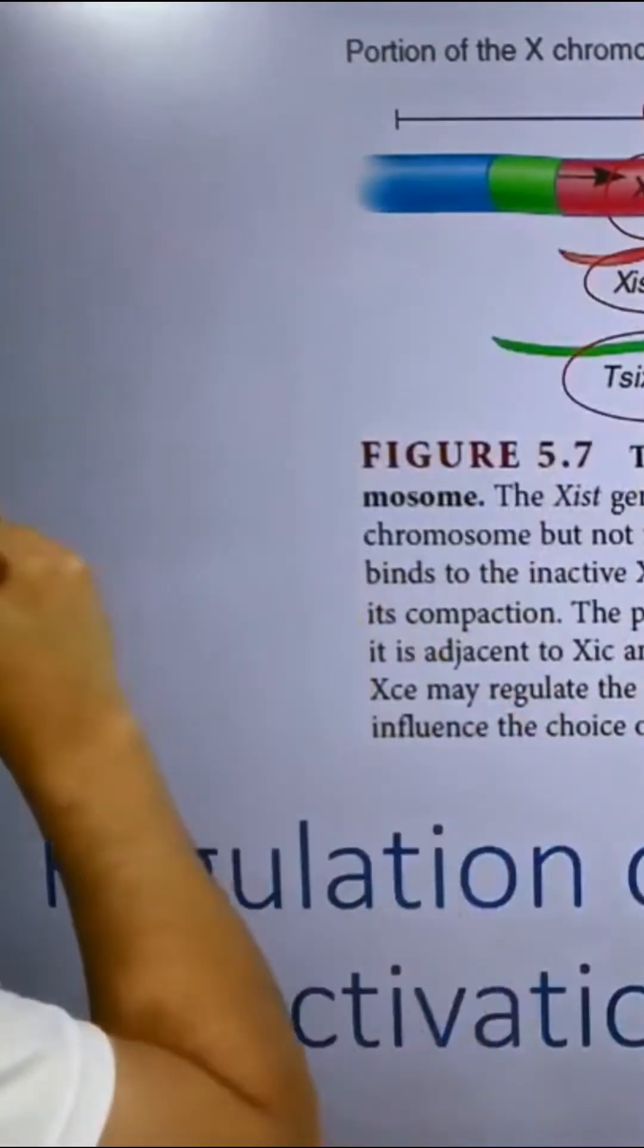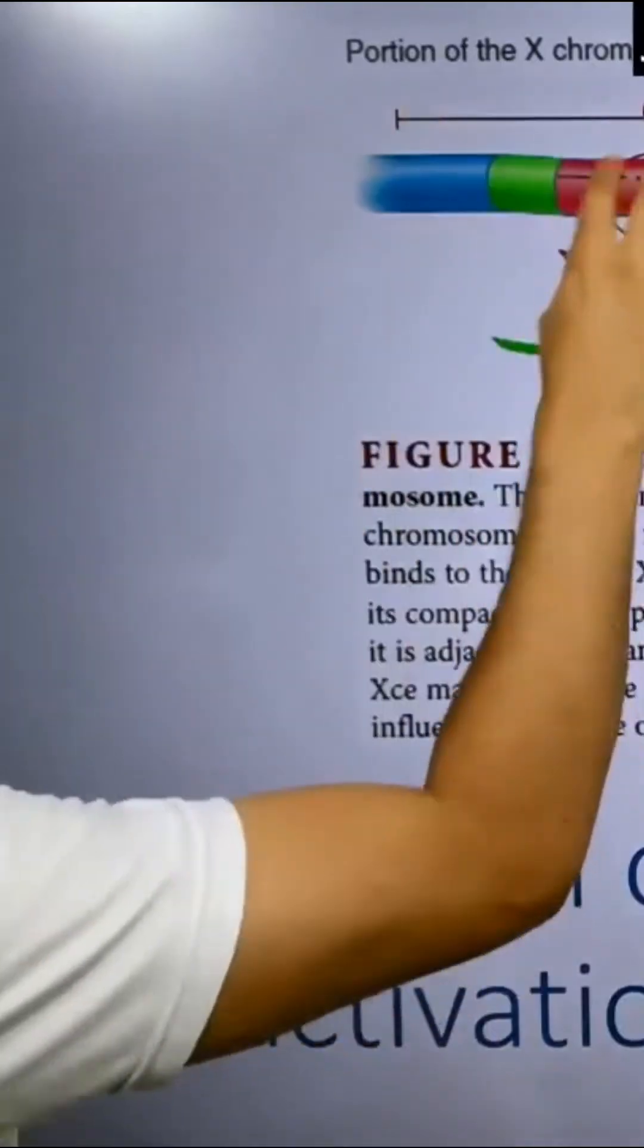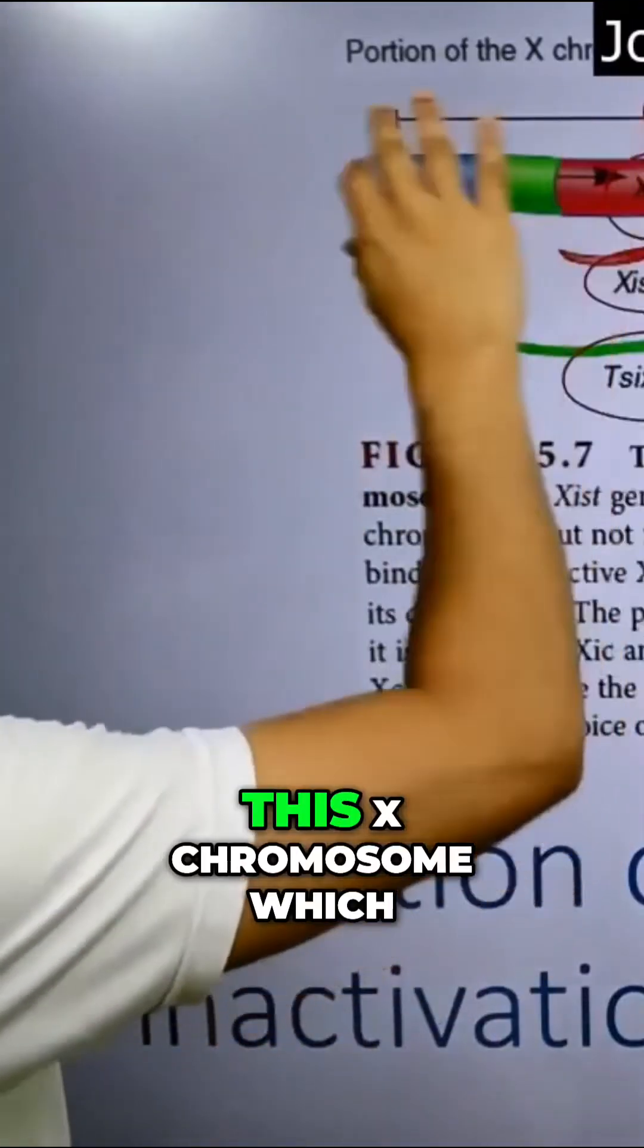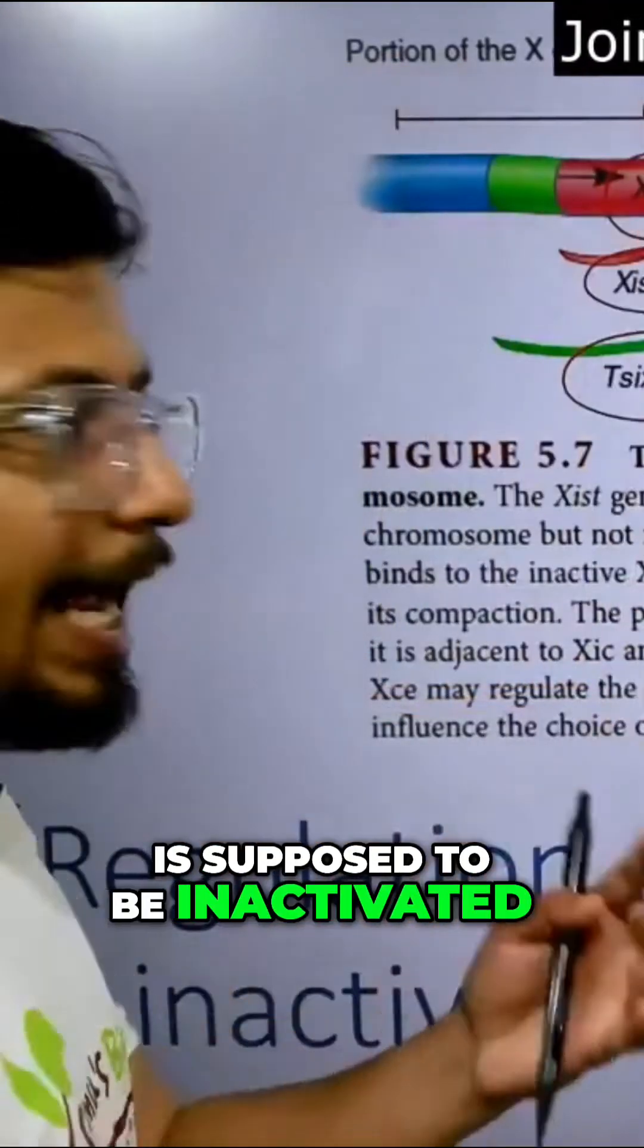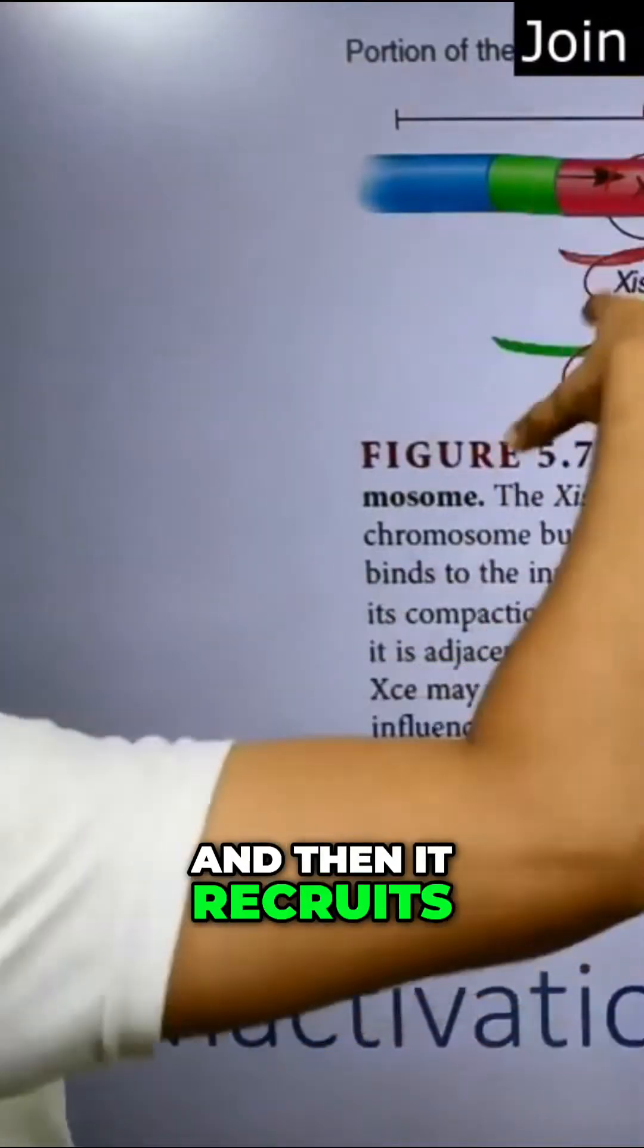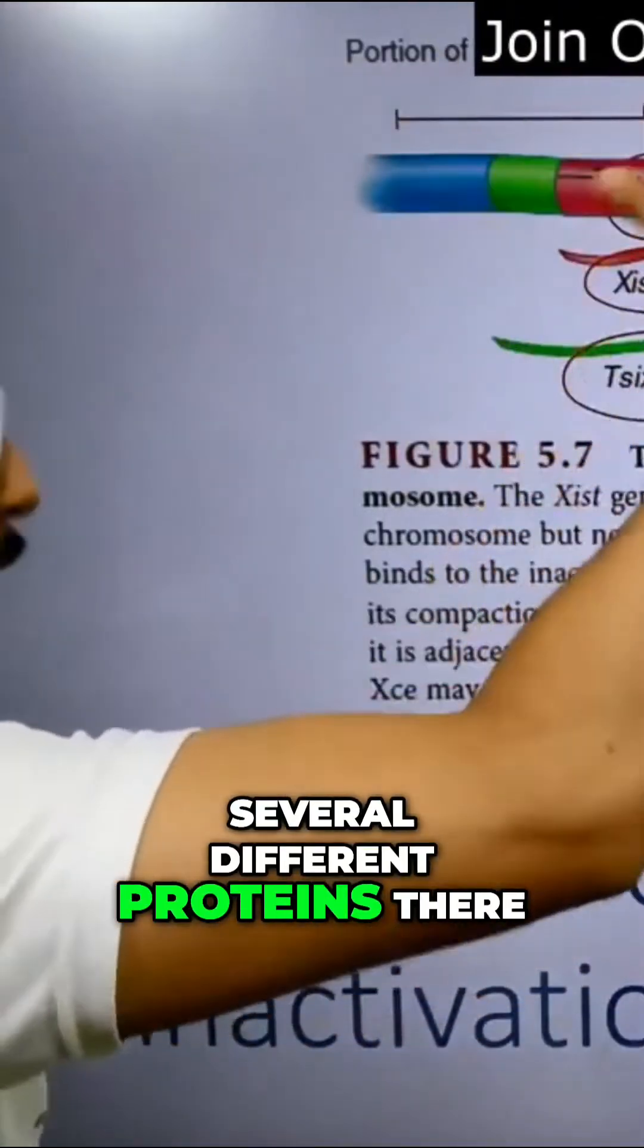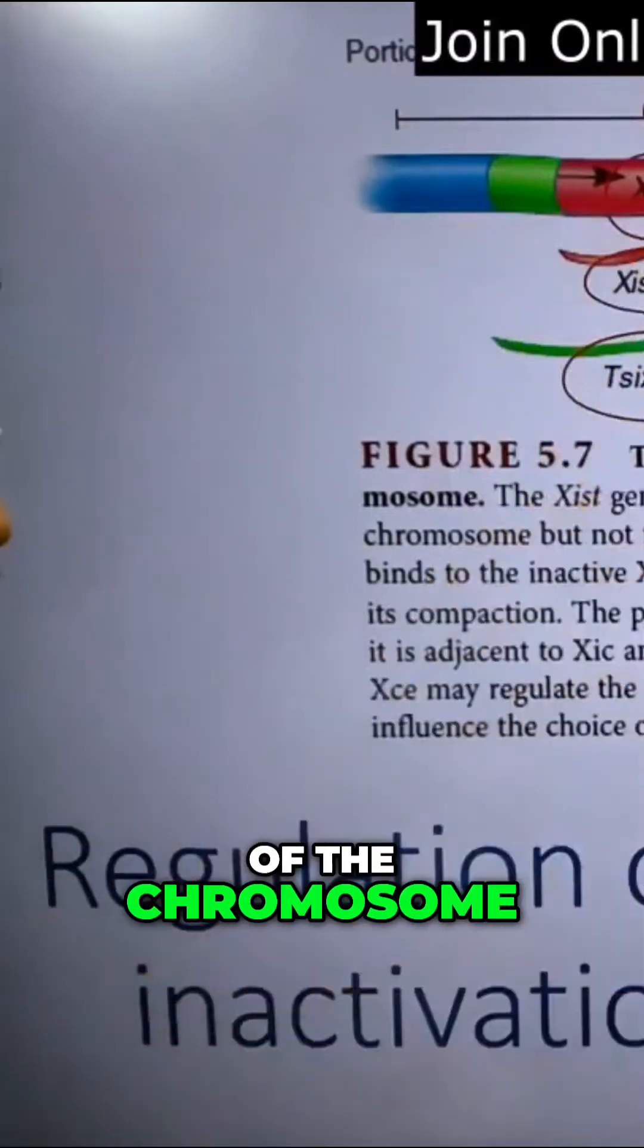Now what they do is basically, this Xist RNA binds to the X chromosome which is supposed to be inactivated and then it recruits several different proteins there for the condensation of the chromosome.